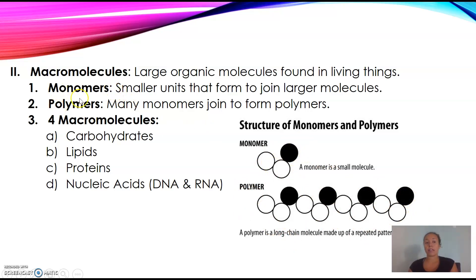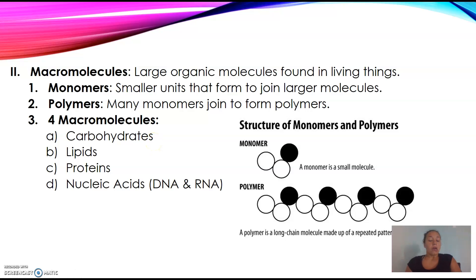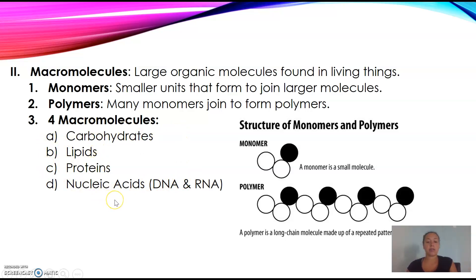Mono means one, poly means many. So a monomer is just one small molecule; the polymer, your huge macromolecule, is made up of repeating units. Your four macromolecules are carbohydrates — or carbs — lipids, which are fats, proteins, and nucleic acids, which are your DNA and RNA. Your body needs all of these things to function, and we get them from food.